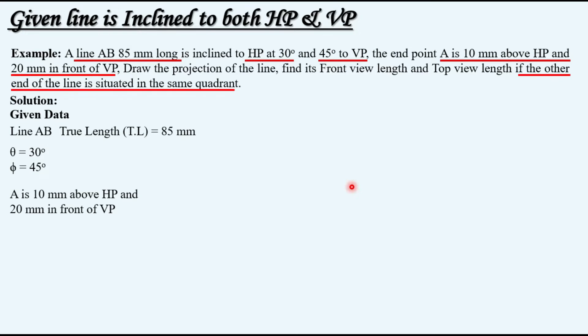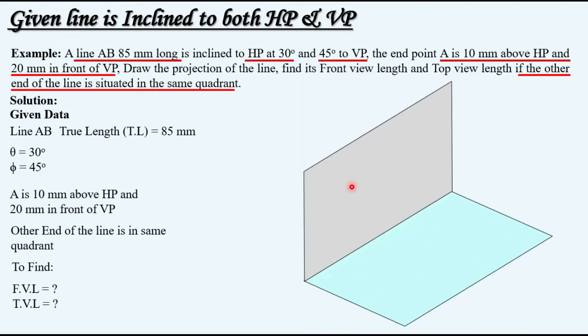It is also mentioned that the other end of the line is situated in the same quadrant. Therefore B is also in the first quadrant. What is to be found? The front view length and top view length.